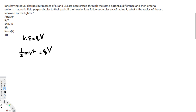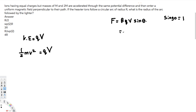We are going to use this force equation: F equals BQv sine theta. This is the equation for the magnetic force. Whenever we have a charge traveling in a magnetic field, the magnetic field is going to be perpendicular to the charge, so theta is 90 degrees. Sine 90 degrees equals 1, so the force simplifies to just BQv.